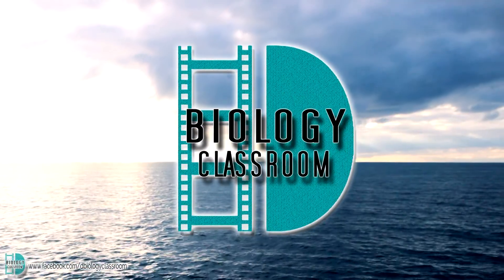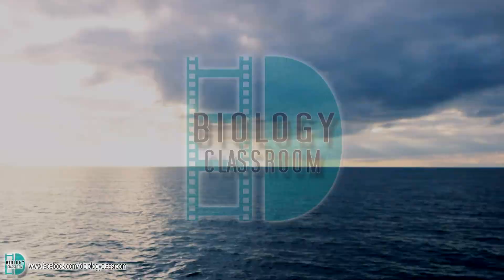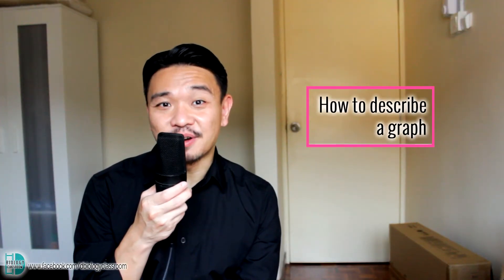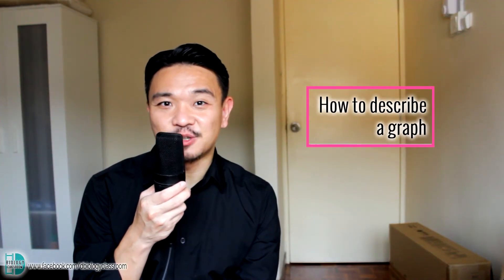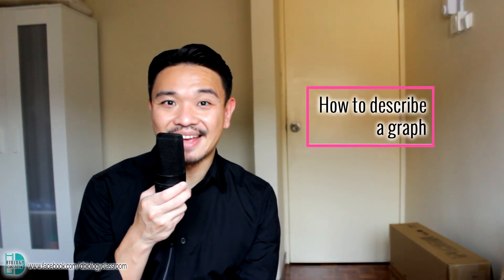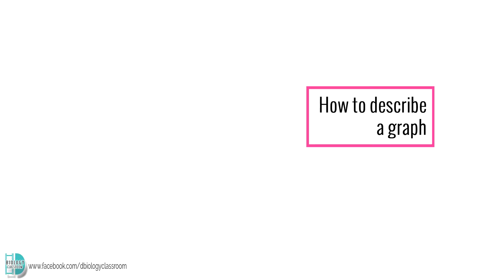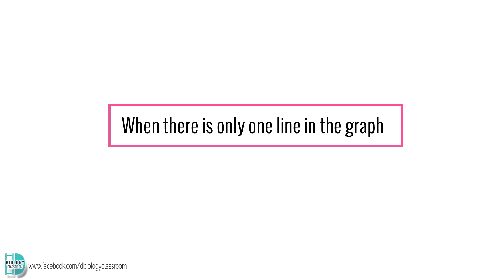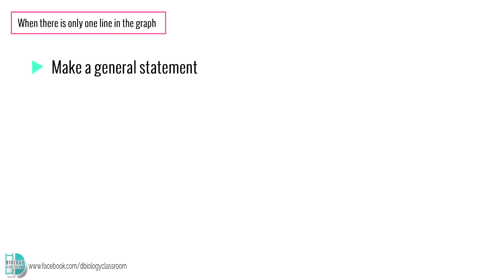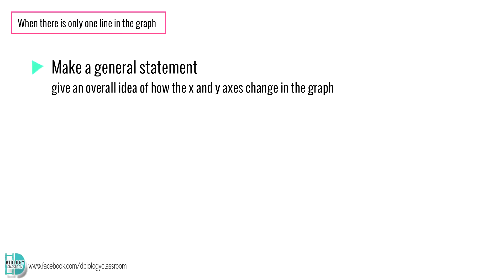Hi, I'm David, and this is The Biology Classroom. In this video, I'm going to tell you a few things that you need to know when you want to describe a graph in the exam. When there is only one line in the graph, firstly, you need to make a general statement for the graph. Your general statement should give an overall idea of how the x and y-axis change in the graph.